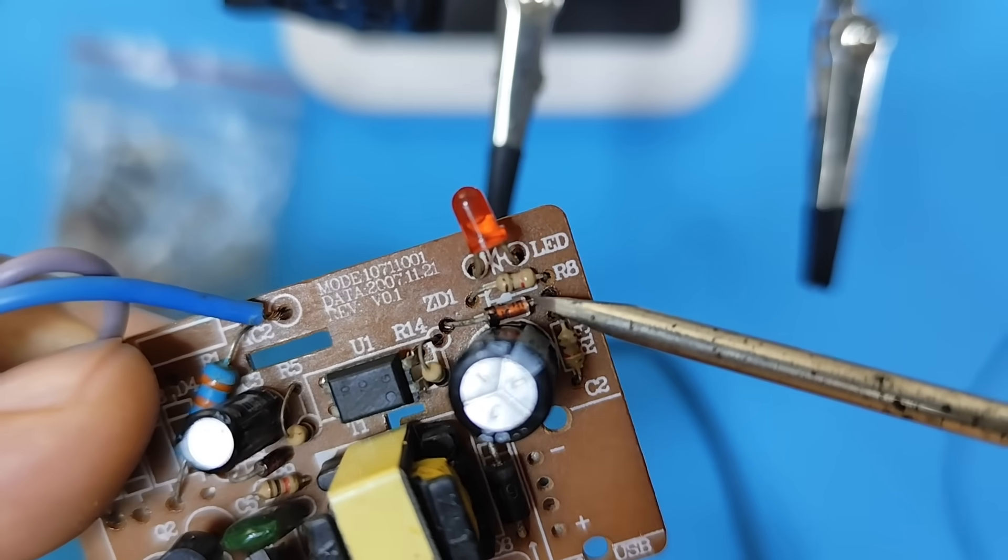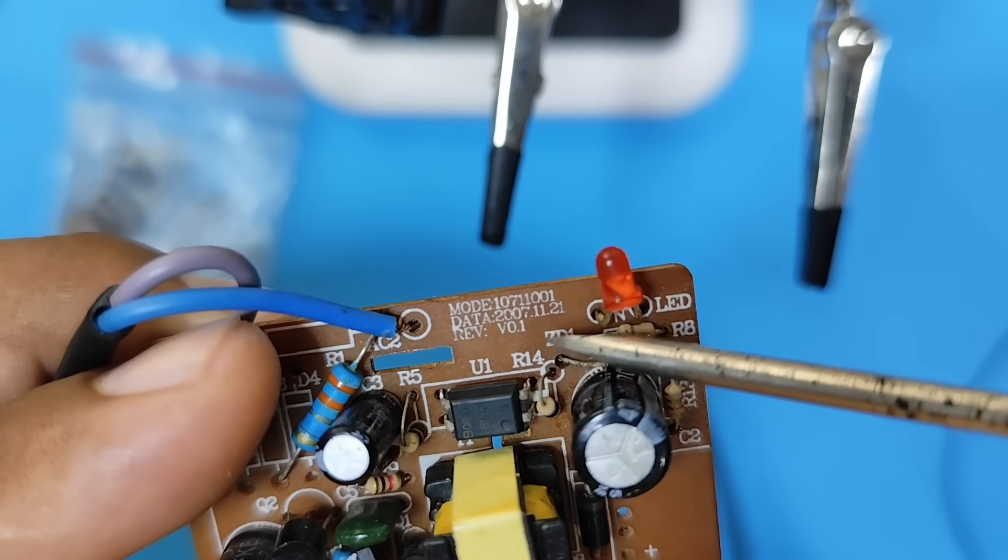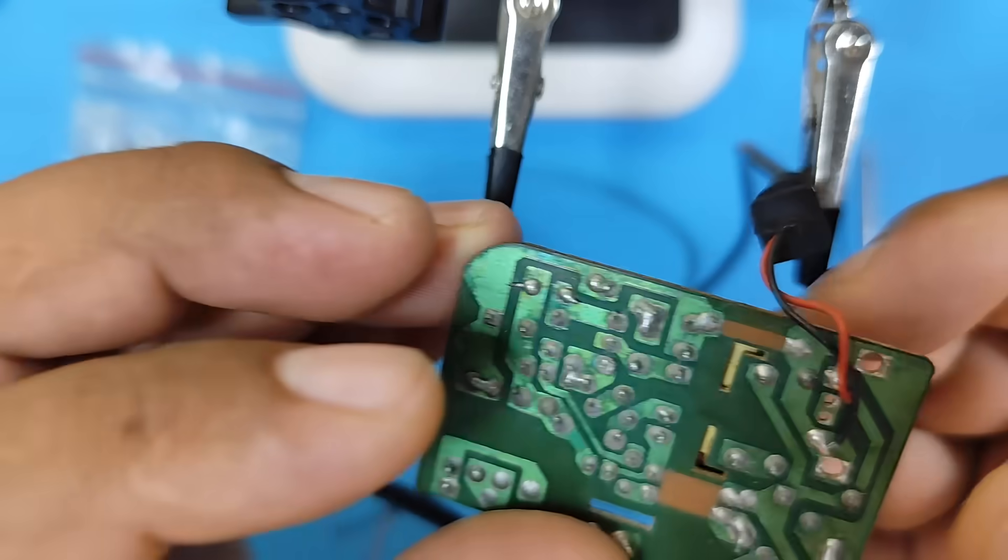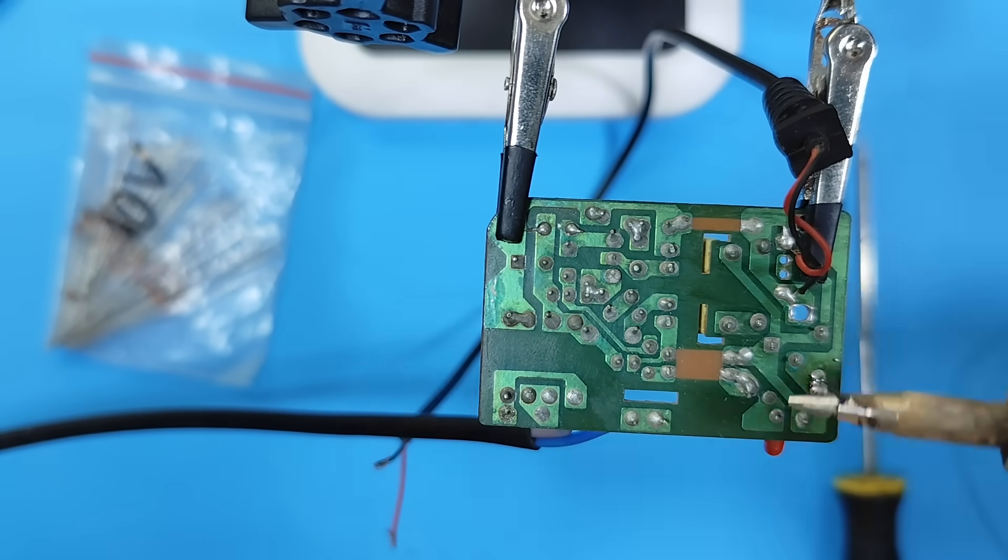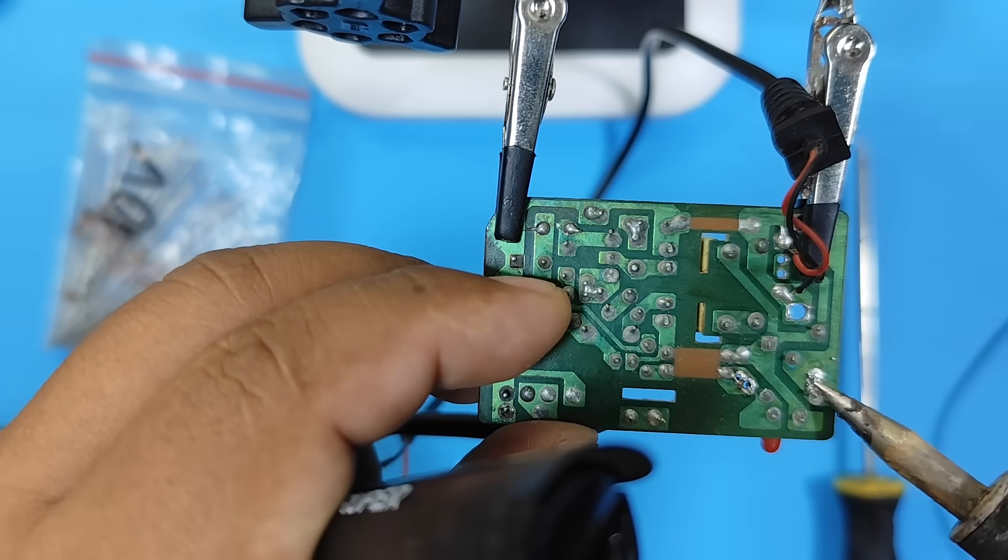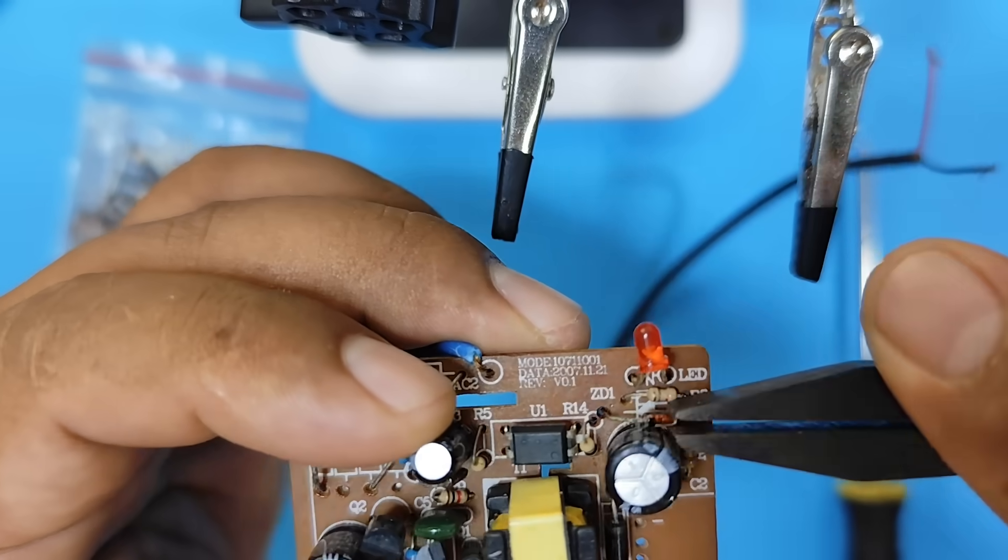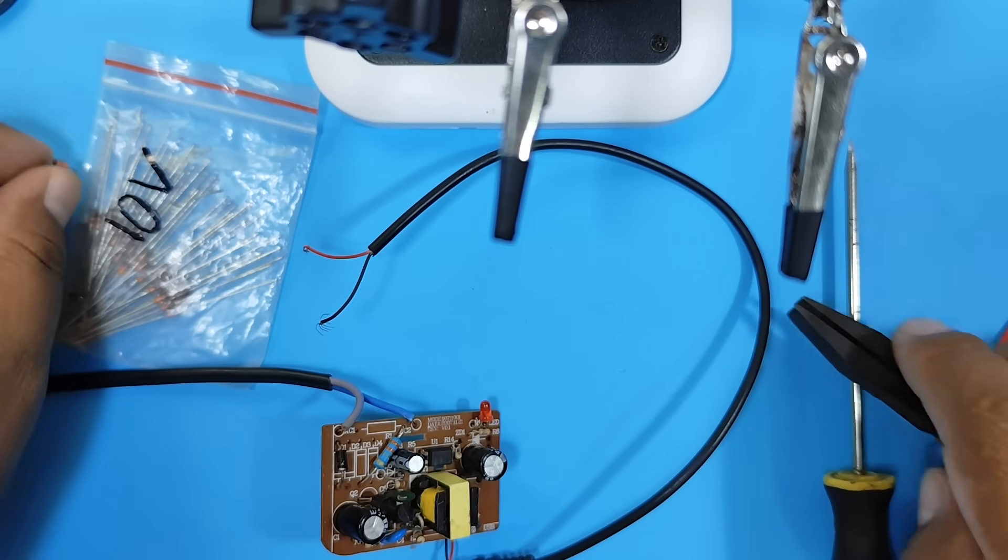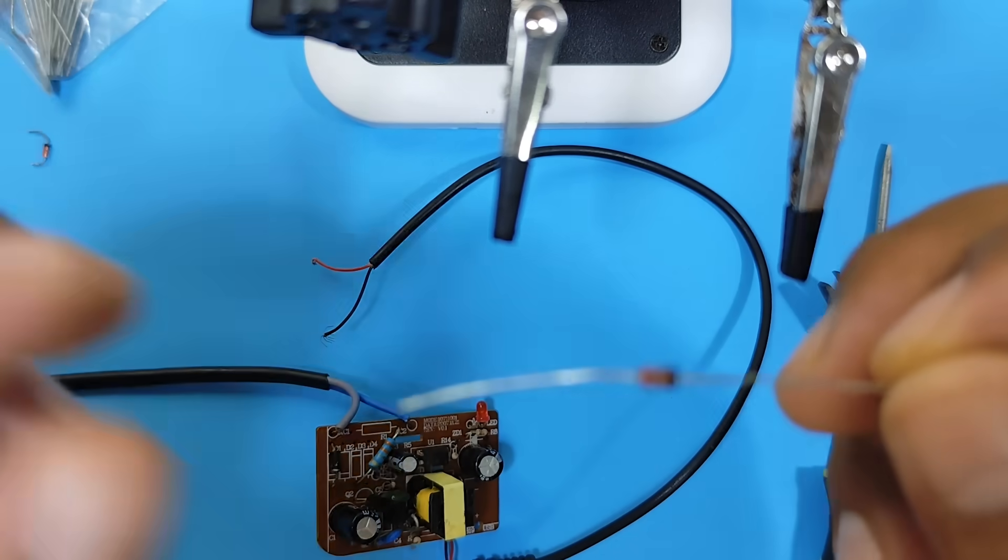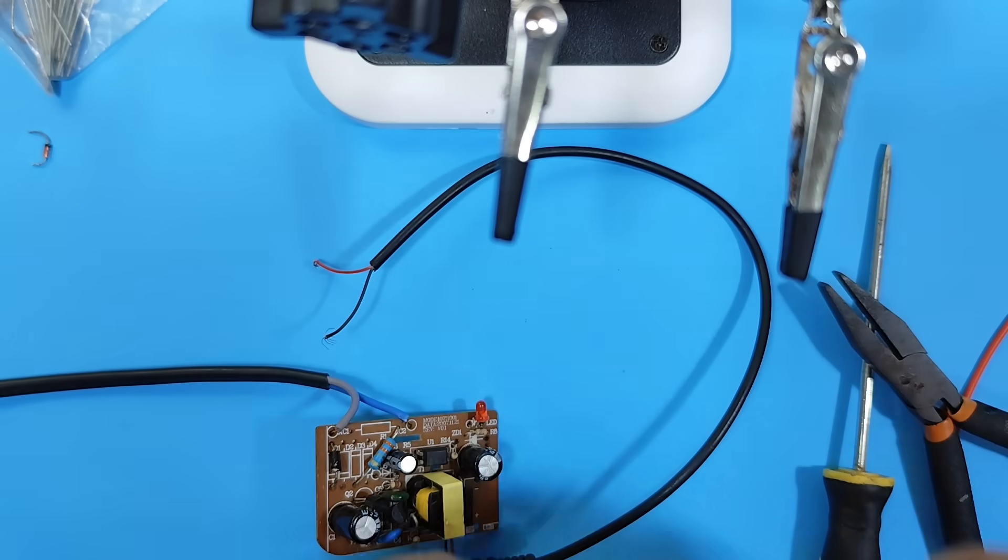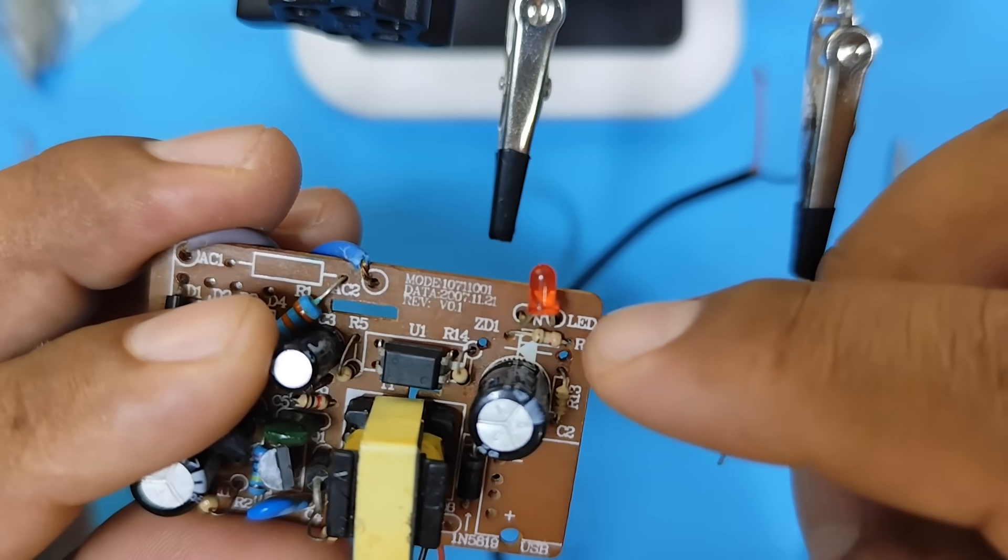Okay. So, we're going to remove this Zener diode and replace it with another diode. You can see that the cathode is on the left side. We replaced it with a 10 volt one. The cathode is connected to the cathode.